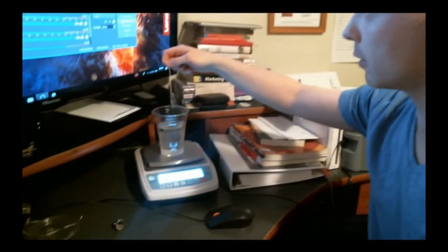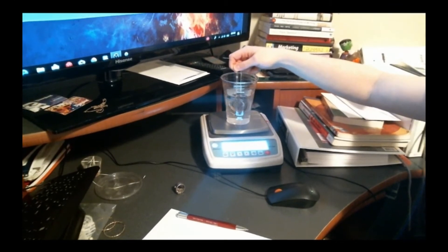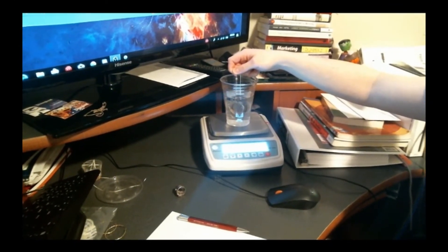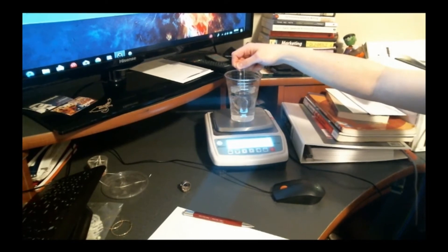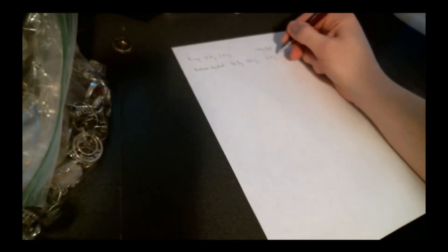So we're going to do the belt buckle now. So it's giving me 2.6 grams of water displaced. I can just drop that in there. 2.6 grams H2O.